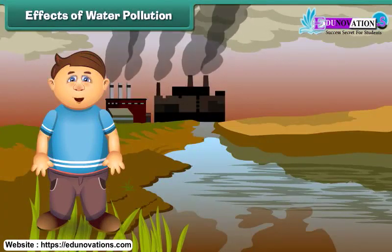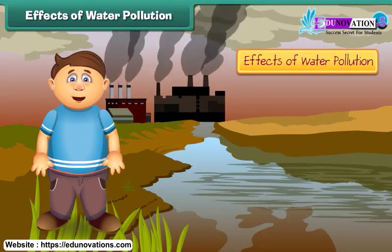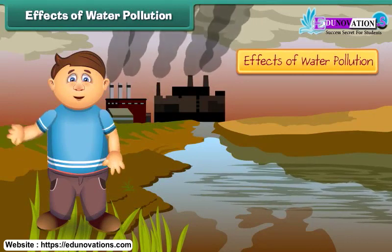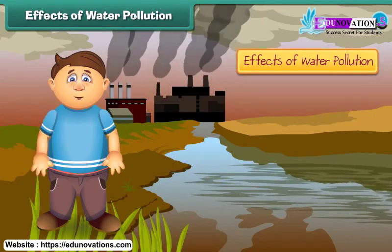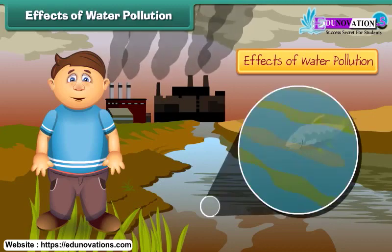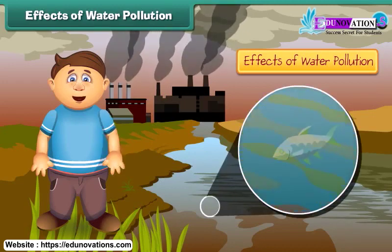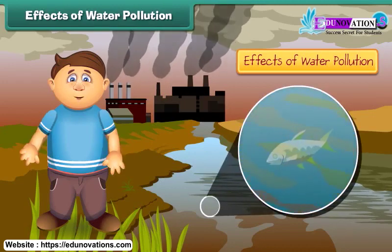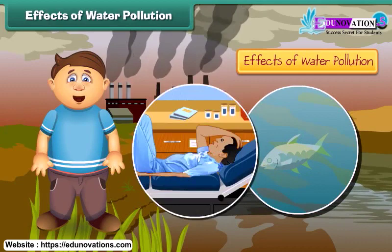What are the effects of water pollution? Poisonous chemicals released from factories and industries enter water bodies, due to which marine life is getting affected. If we consume such fish, we will also fall ill.